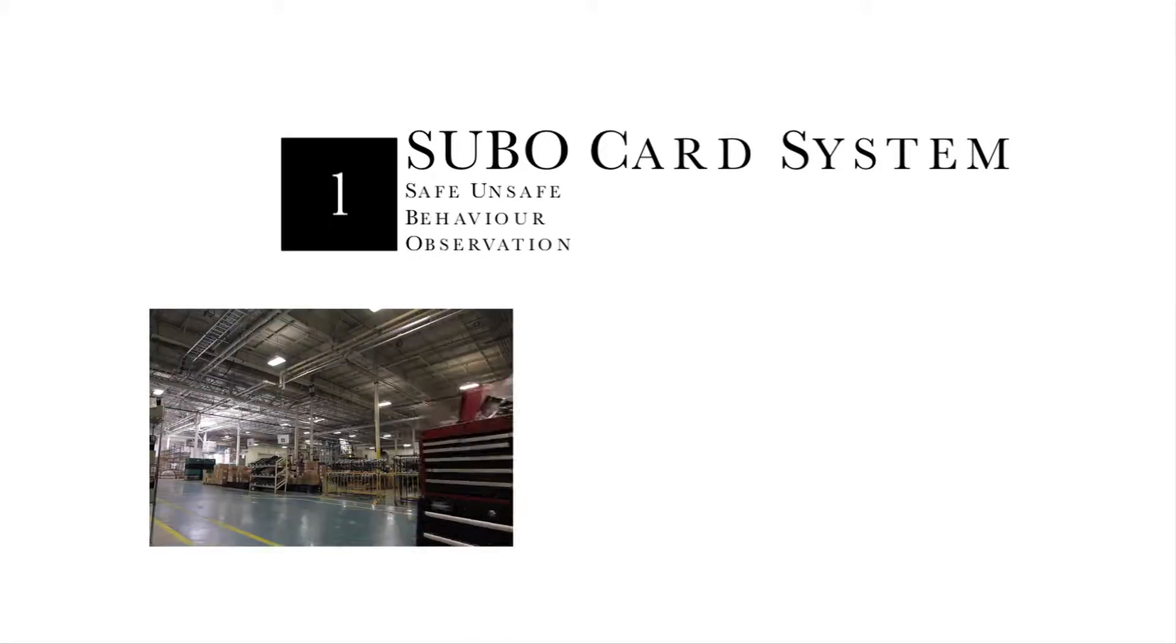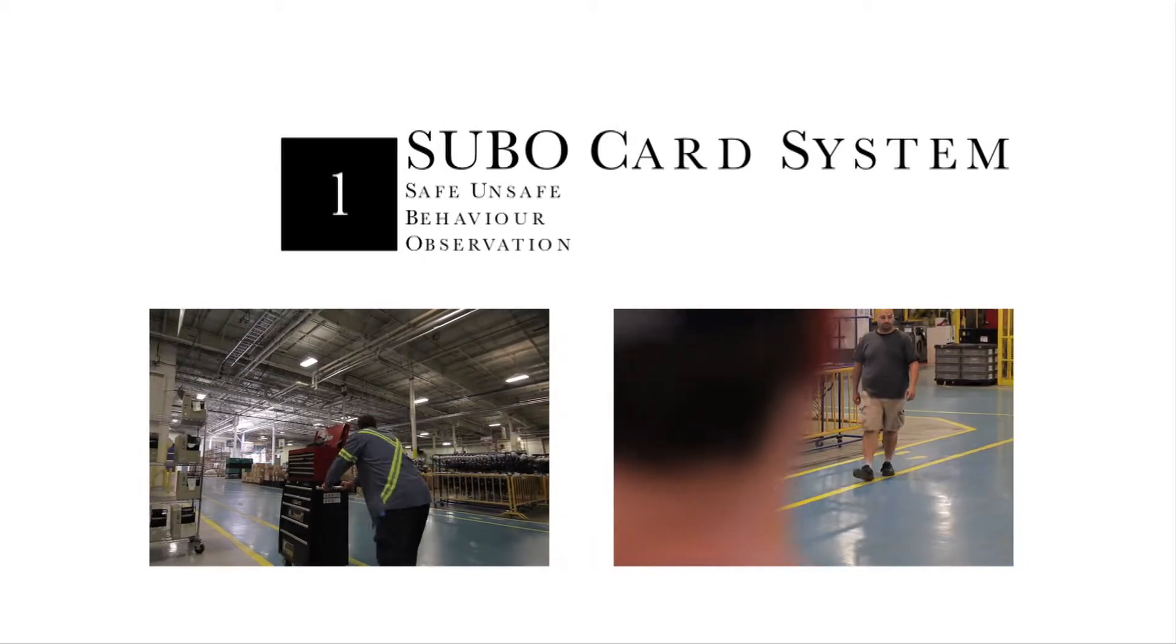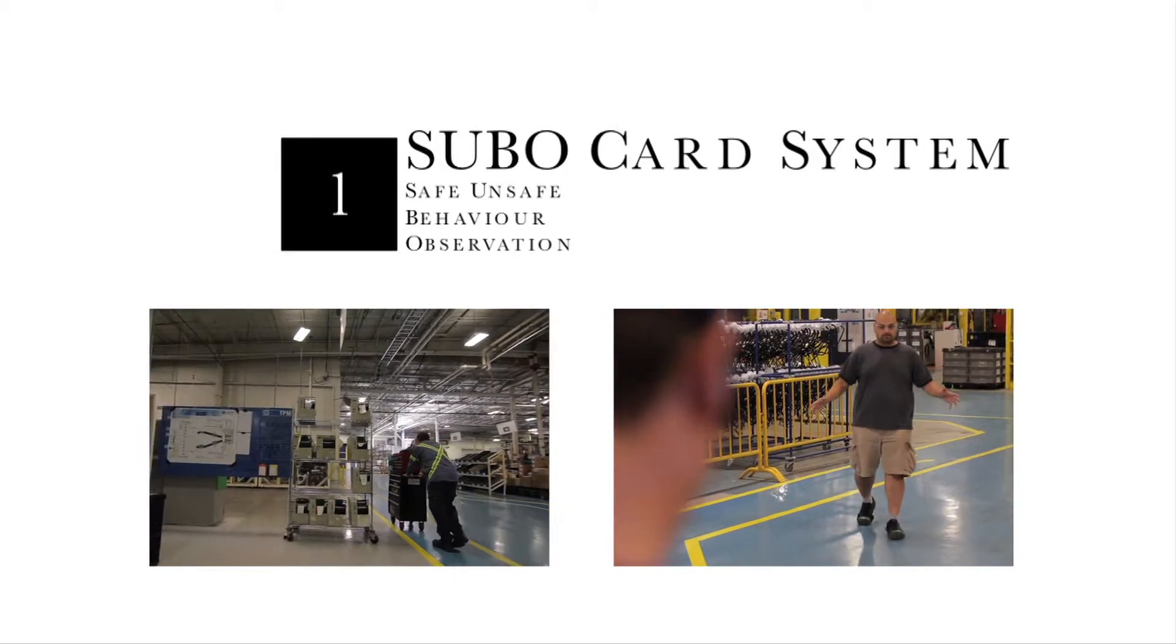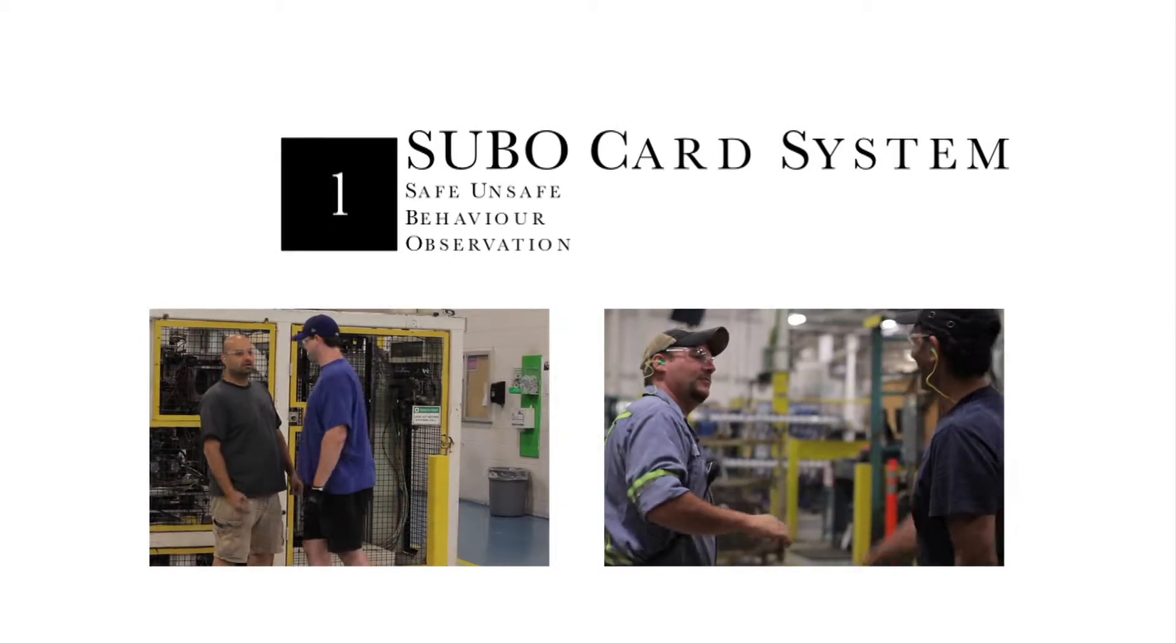First, there's the SUBO card system. SUBO stands for Safe, Unsafe Behavior Observation. SUBO allows you to identify situations of both safe and unsafe behavior throughout the plant. It also allows you to stop or encourage that behavior.